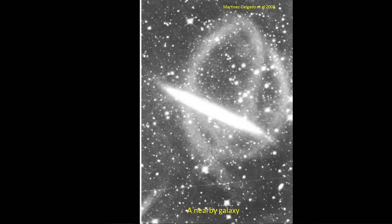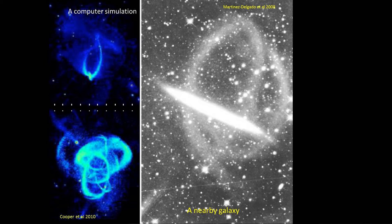Around this apparently normal, nearby galaxy — which is overexposed in this picture — he picks up these really faint streams. These streams are due to a small companion falling in and being pulled apart as it goes around at least twice around this galaxy. Computer simulations show a similar story, mimicking this phenomenon and producing these same patterns.